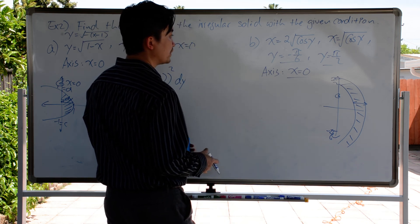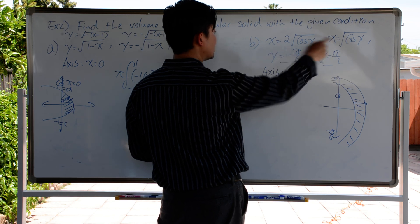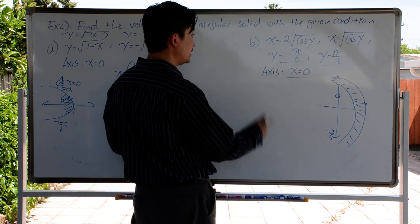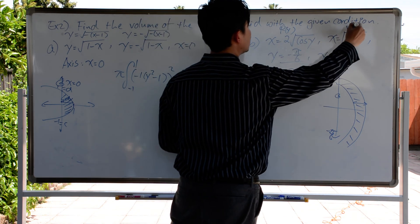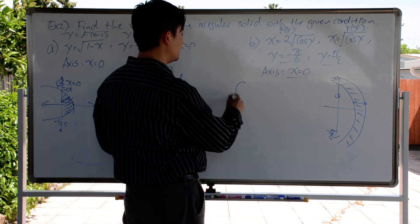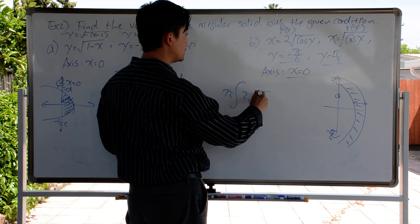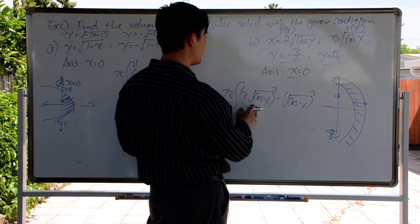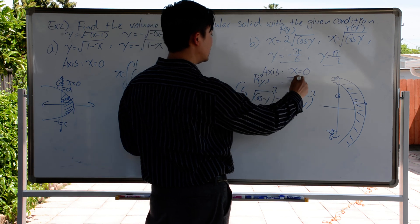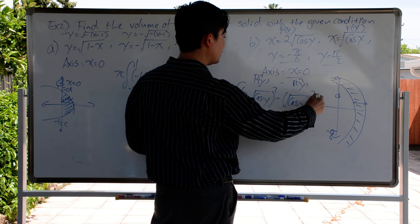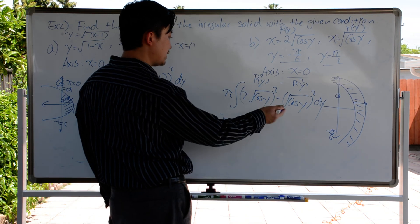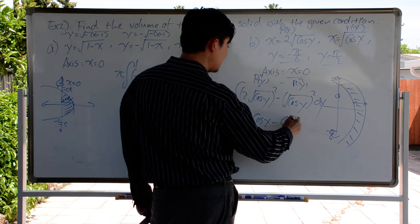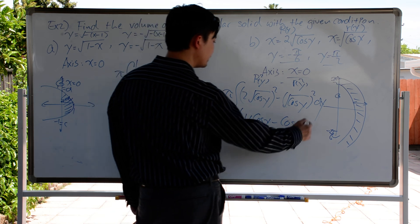This time we need to use the Washer Method. The amplitude of one function is 2 and the other is 1, so the first one is more extended — it's the outer radius. The other is the inner radius. Setting up the integral: pi times the outer radius squared, which is 2 times square root of cosine y, quantity squared, minus the inner radius squared, which is square root of cosine y, quantity squared, with respect to dy. Simplifying: 4 cosine y minus cosine y, then we can combine like terms.